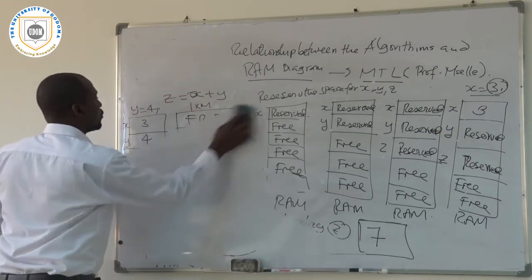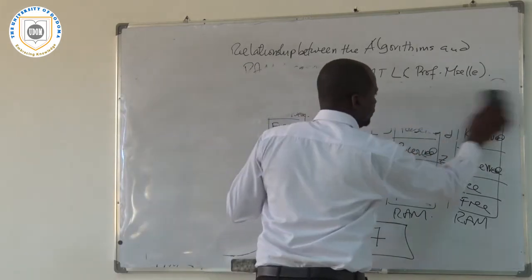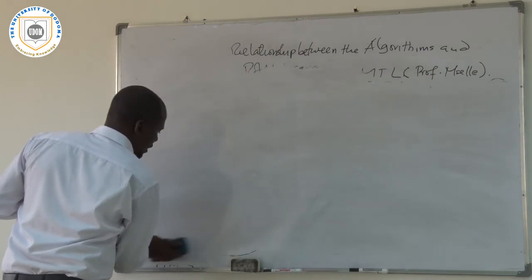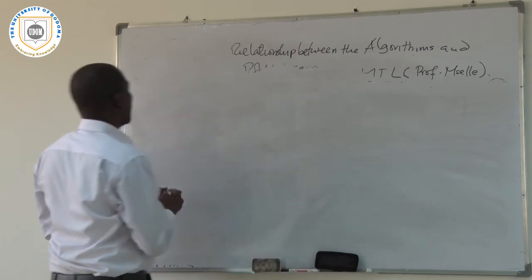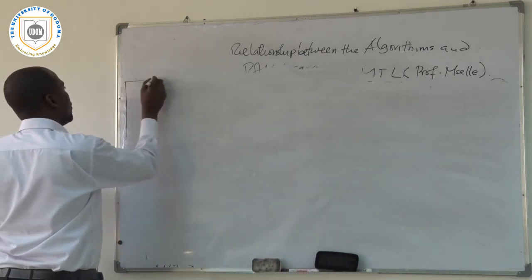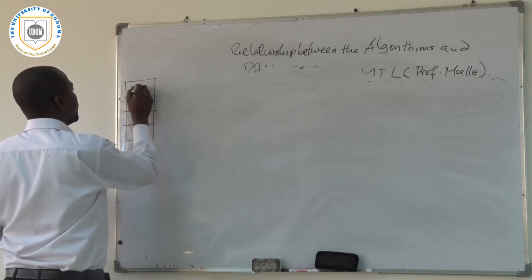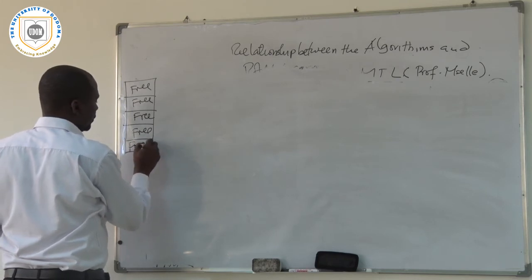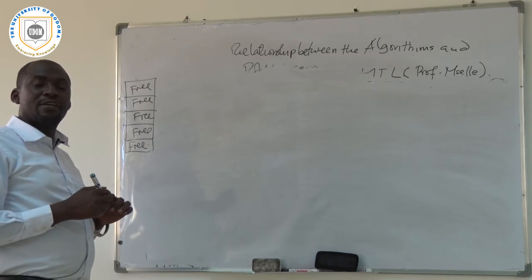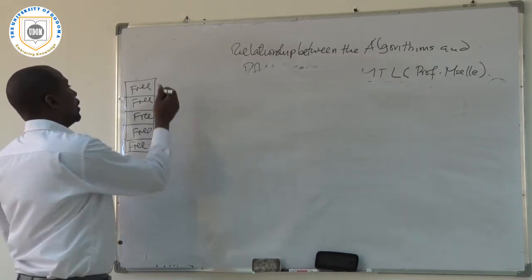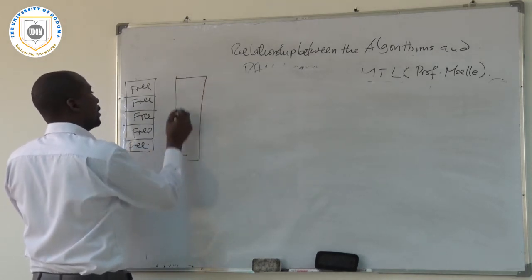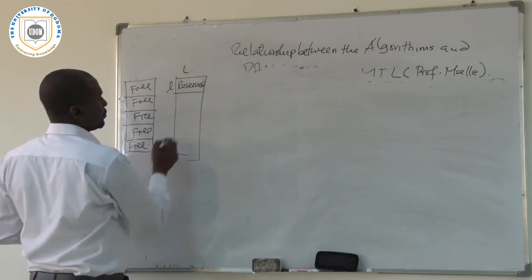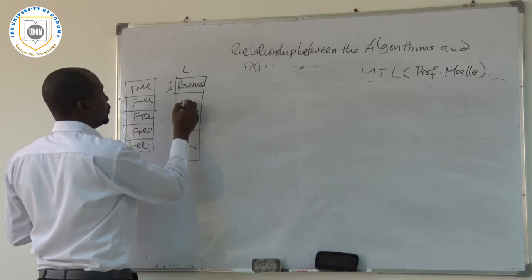Now let me take the second example — the algorithm of finding the area of a rectangle. At the beginning, the RAM will always be free: all five spaces are completely free. The first step is to reserve a space for L, the length. Now one space becomes reserved for L while the remaining four spaces continue to be free.